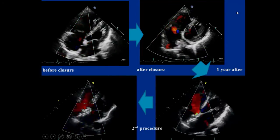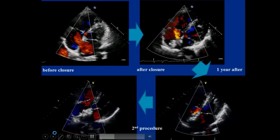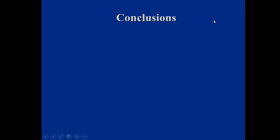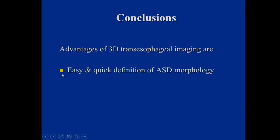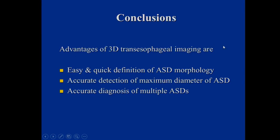In conclusion, the advantages of 3D transesophageal imaging are: quick definition of ASD morphology, which is very important for interventional operators; accurate detection of the maximum diameter of ASD, especially important for large ASDs and patients with inferior posterior rim deficiency; and accurate diagnosis of multiple ASDs, which is easy and clear with 3D transesophageal imaging. Thank you very much.